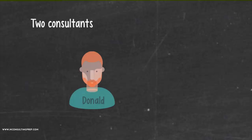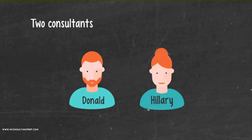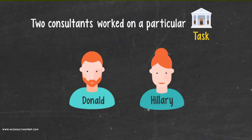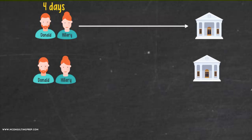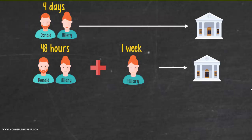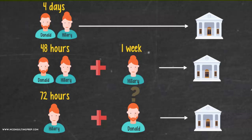Two consultants, Donald and Hillary, worked on a particular task. It took them four days to finish. On a similar task, two of them only worked together for the first 48 hours. Then Donald got upset and left work. It took Hillary another week to complete. Now, if Hillary was to do the task alone for 72 hours, and then leave it for Donald to complete on his own, how long would it take Donald?